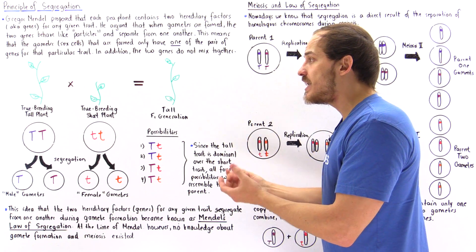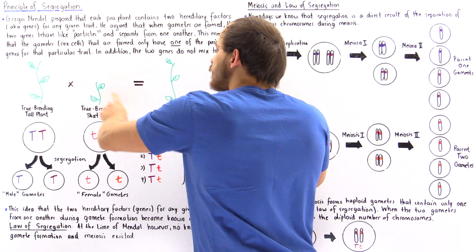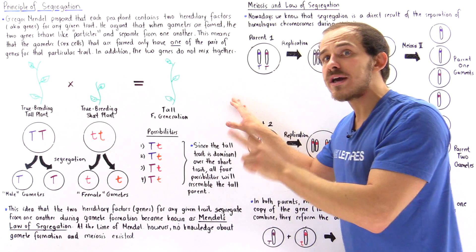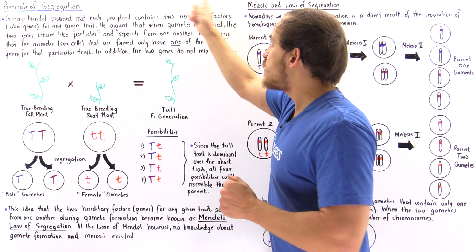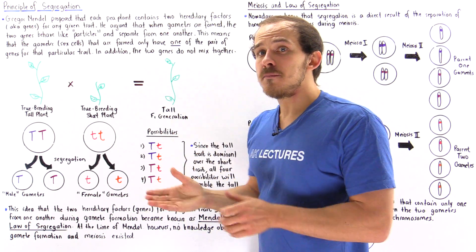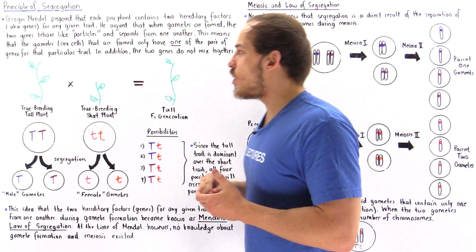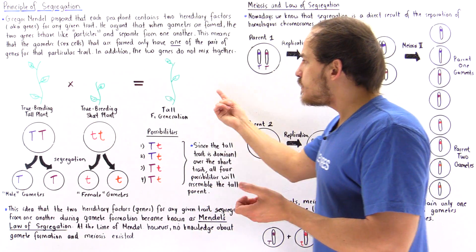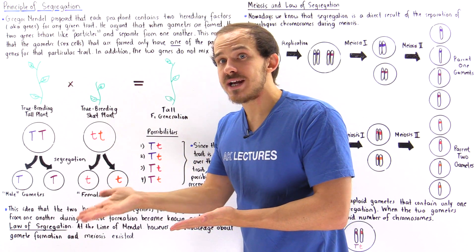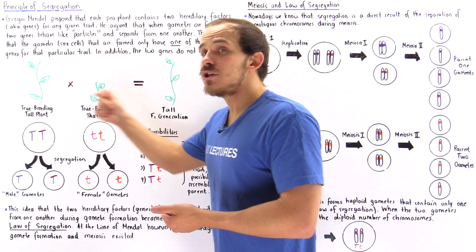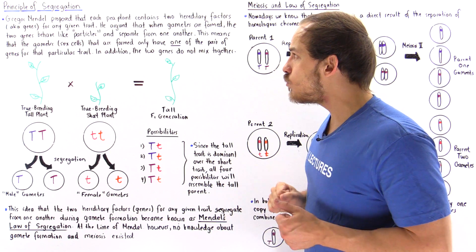That meant the tall F1 generation offspring had the short trait in it all along, but it was being inhibited — it wasn't actually being expressed. Because of this, Mendel proposed that each plant contains two hereditary factors that code for a given trait, in this case height. He argued that the tall trait is actually dominant over the short trait, which is said to be recessive.